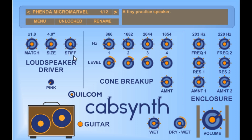The stiff knob sets the simulated stiffness of the cone and suspension system, so at maximum it would be the stiffest suspension and cone. Now cone break-up is very undesirable in hi-fi speaker systems, but in guitar speakers it's actually desirable because it adds to the colouration and the tone produced by the speakers.